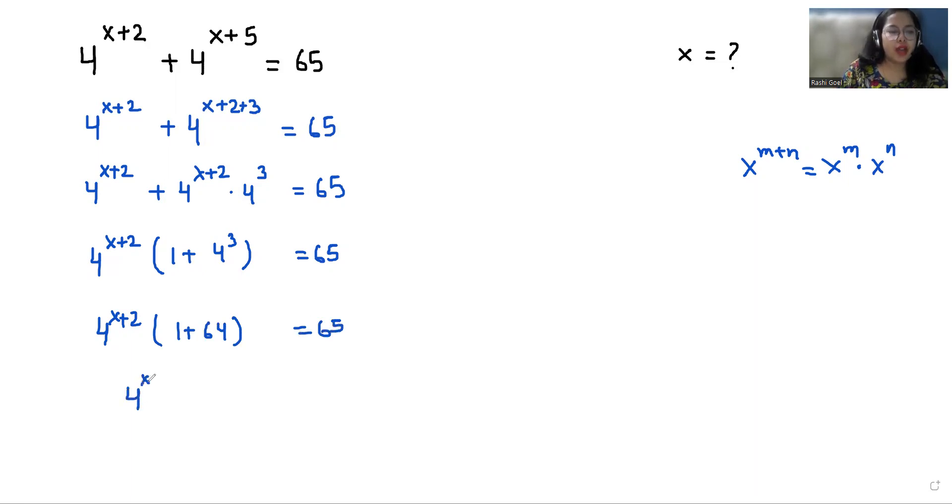4 power x plus 2 times 65 equals 65. Now I am going to divide with 65 both sides. So we can cancel out this. So 4 power x plus 2 equals 1.